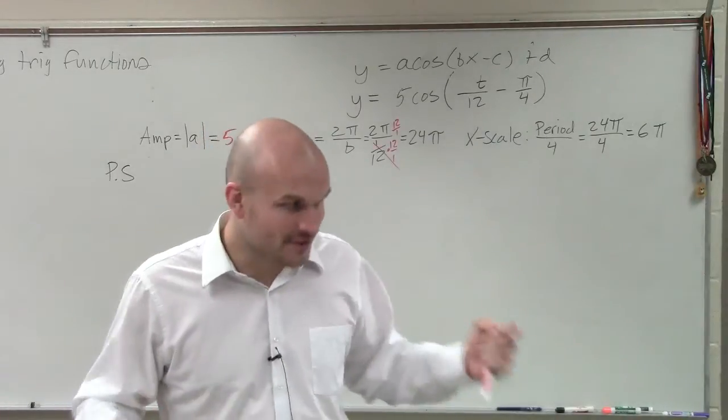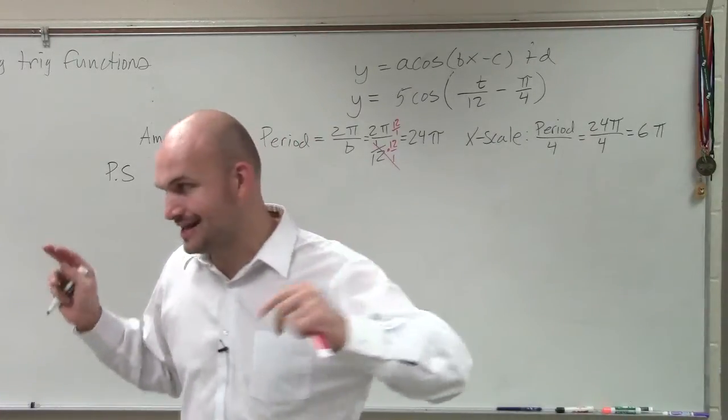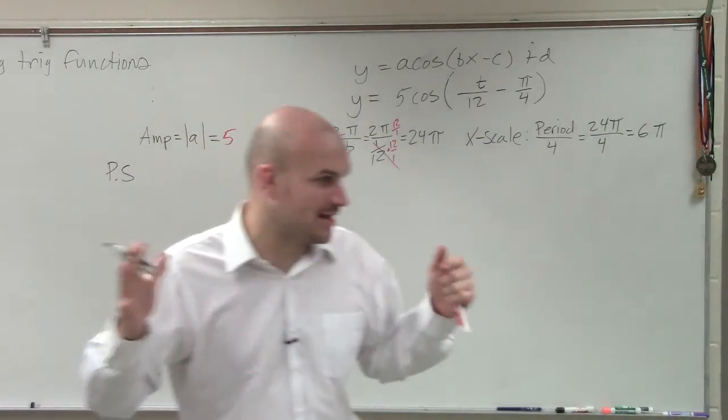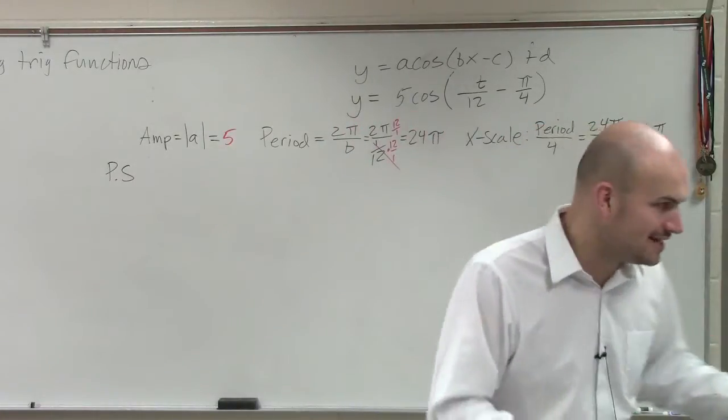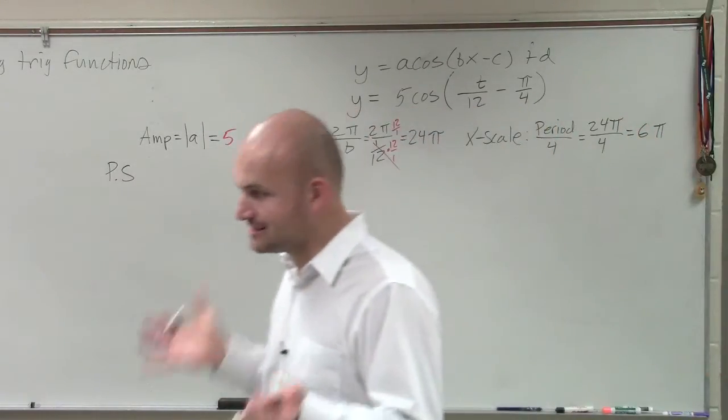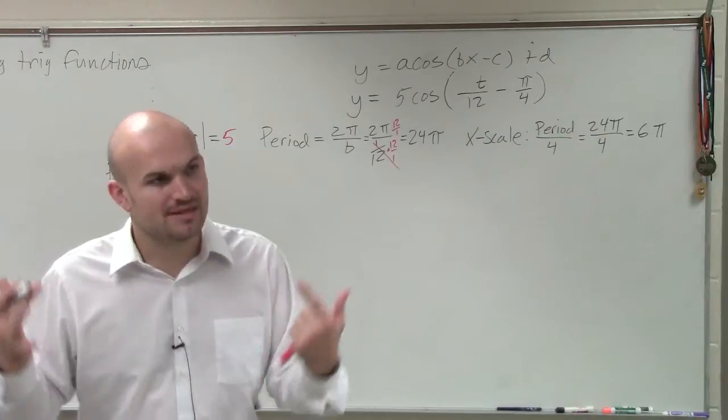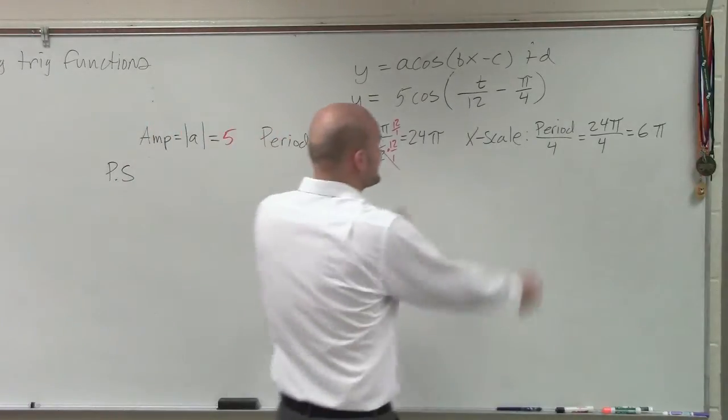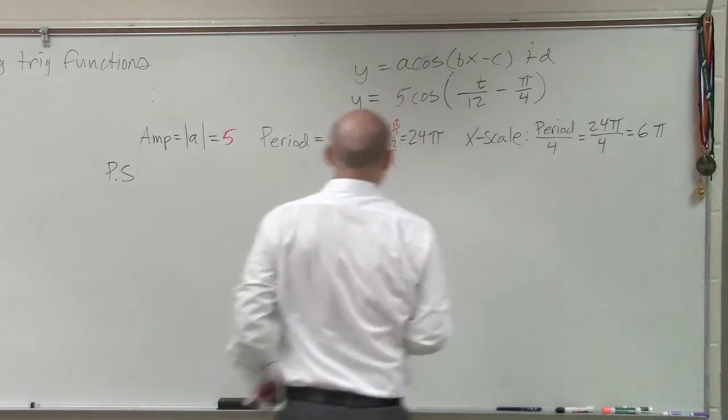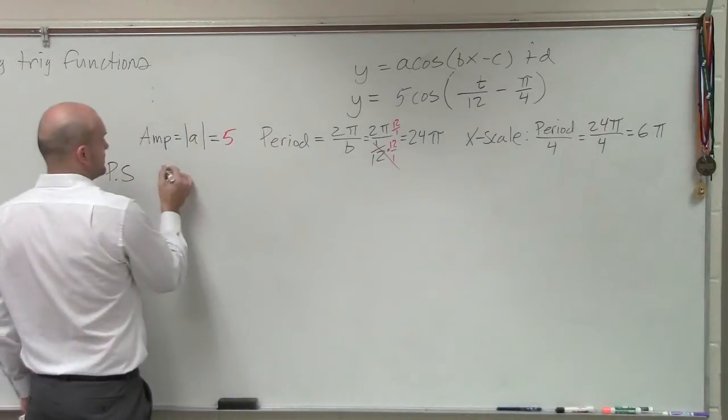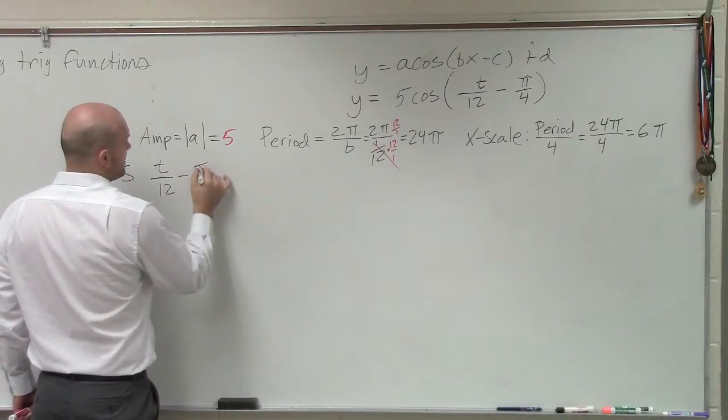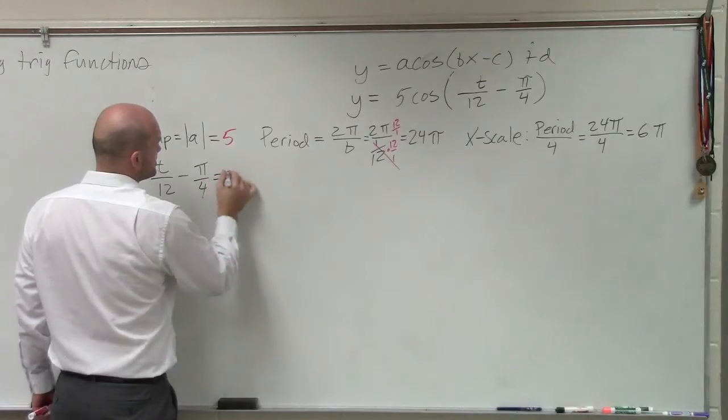A lot of you are going to make this mistake. I haven't had a class yet that somebody has not made the mistake. And the reason why they probably made the mistake is they're not here in class today, or they didn't pay attention and didn't write it down. When determining the phase shift, take what's inside the parentheses and set it equal to 0. So it's t over 12 minus π over 4 equals 0.